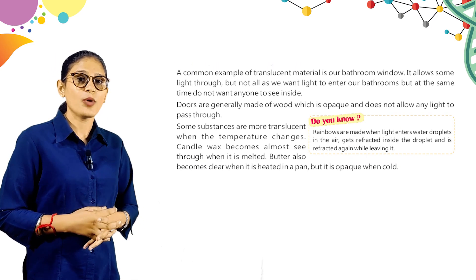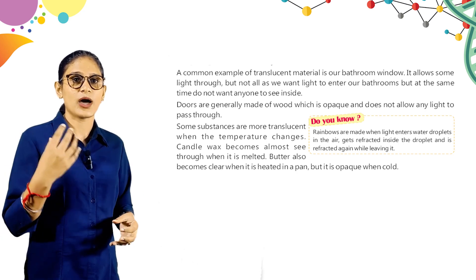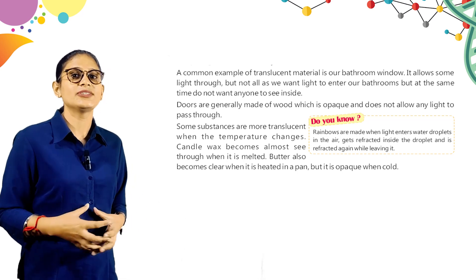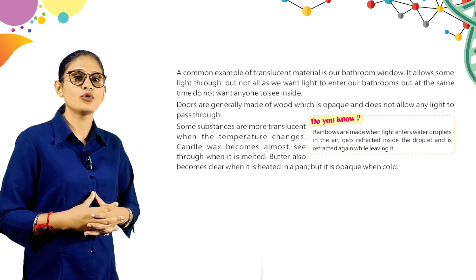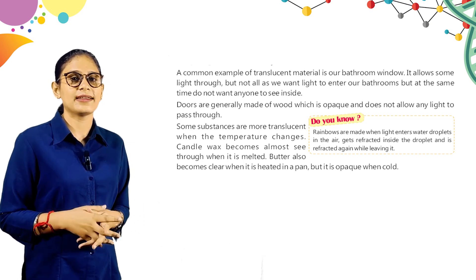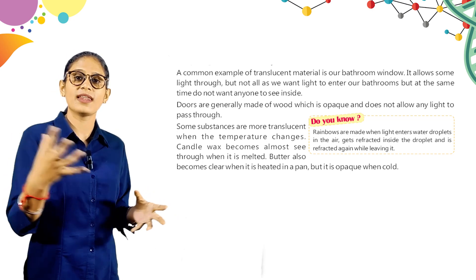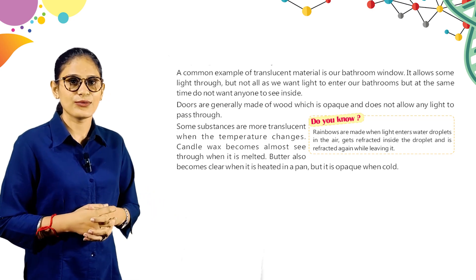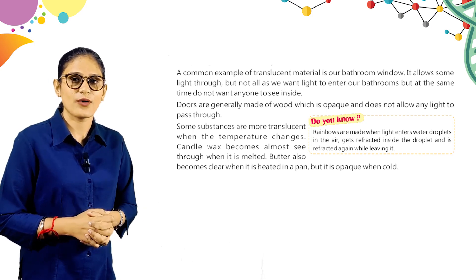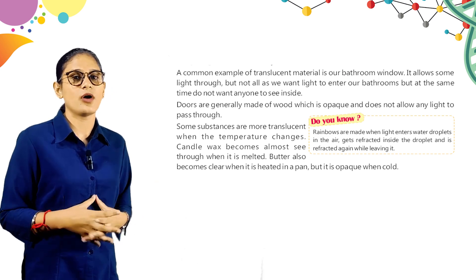A common example of translucent material is our bathroom window — it allows some light in but does not allow anyone to see inside clearly. The glass in bathroom windows is translucent, so light does not pass through it completely. Doors are generally made of wood, which is opaque and does not allow any light to pass through.